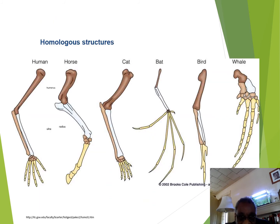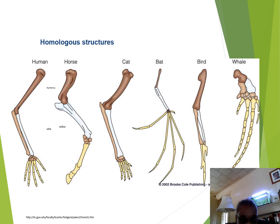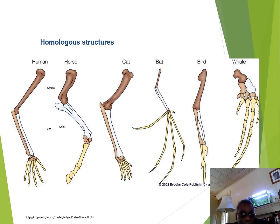Homologous structures evolved different shapes and functions but all came from a common limb structure. Looking at humans, horses, cats, bats, and birds: in humans, the limb evolved highly mobile digits; in horses, those digits have been reduced to one greatly extended digit for running across grasslands; in whales, the fingers evolved into flipper shapes for pushing through water. All of these are homologous structures that arose from one ancestral limb.